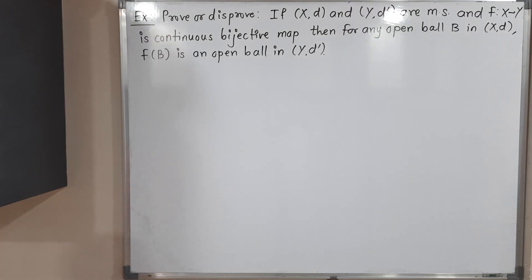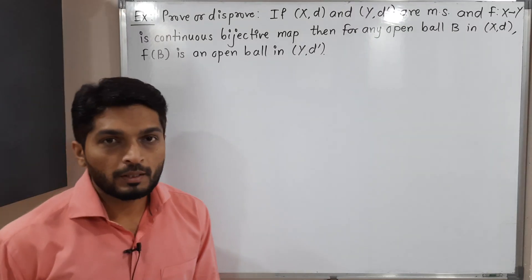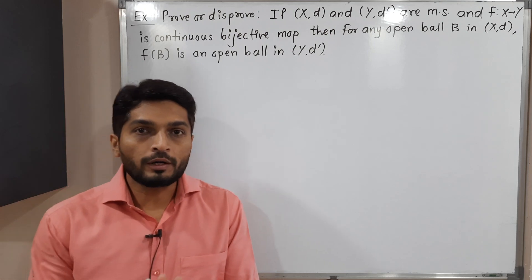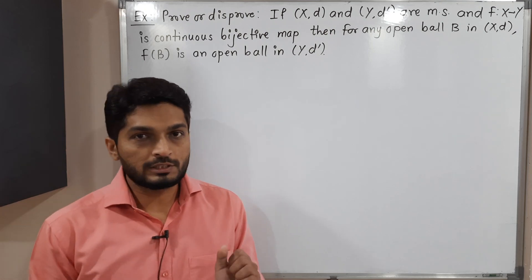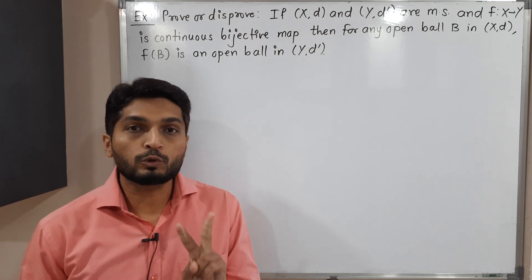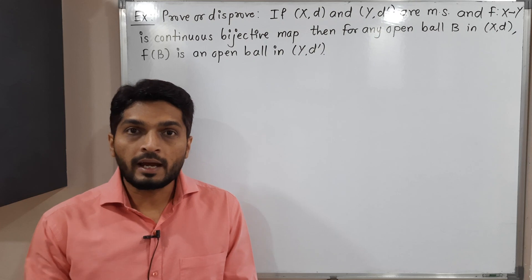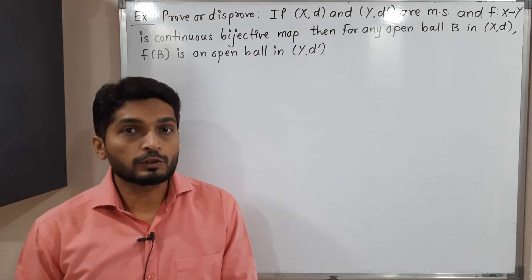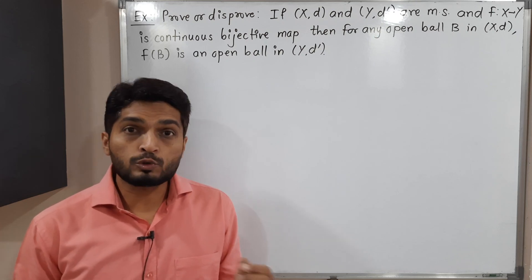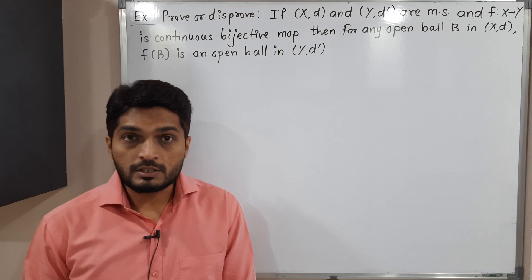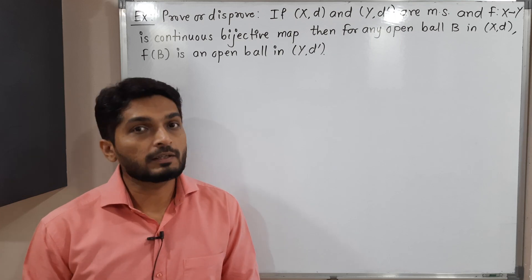Hi everyone. In this video we are going to discuss this example. We have to prove or disprove the statement. The statement is: we have two metric spaces xd and yd dash. F is a function from x to y which is continuous and bijective.